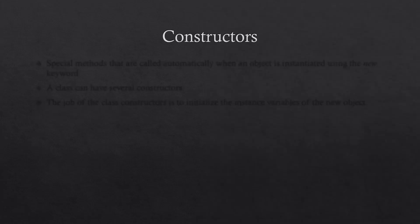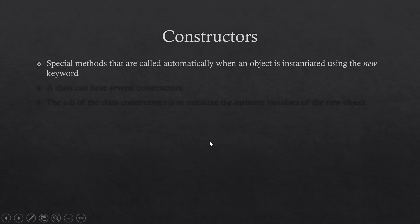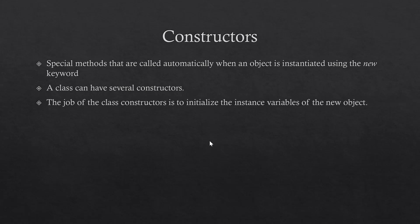A constructor is basically the special method we call to instantiate or create a new object of a class. When we use the new keyword to create an object, we follow that with the constructor, which has the same name as the class name followed by parentheses. Inside these parentheses we could be passing parameters, or we could be using the default constructor which does not accept any parameters. We can have multiple constructors, each initializing our instance variables in a different way. The job of the constructor is to initialize instance variables when we create a new object of that class.